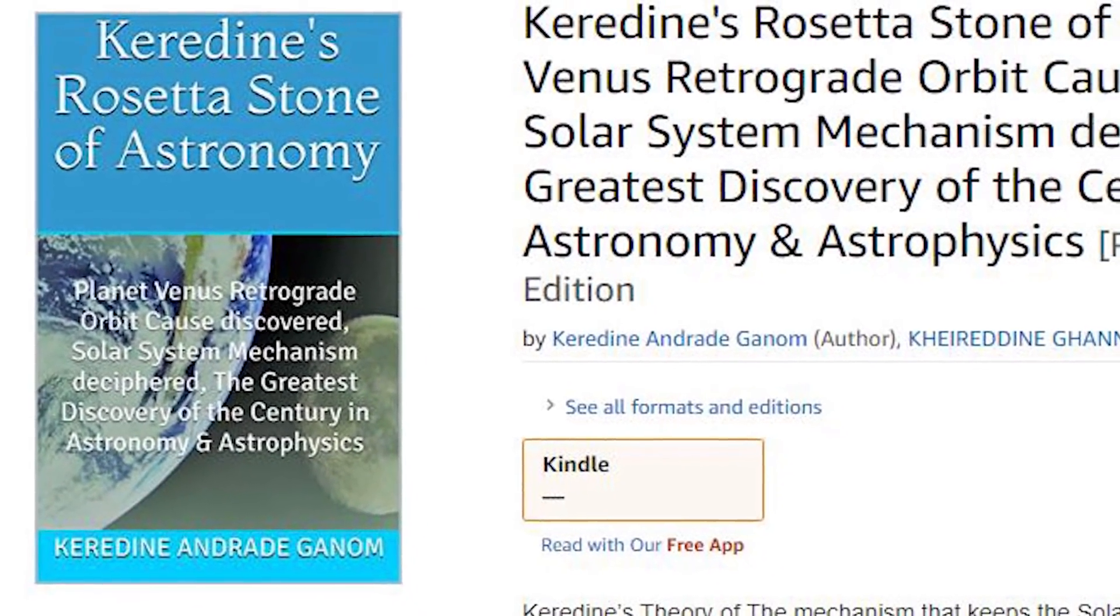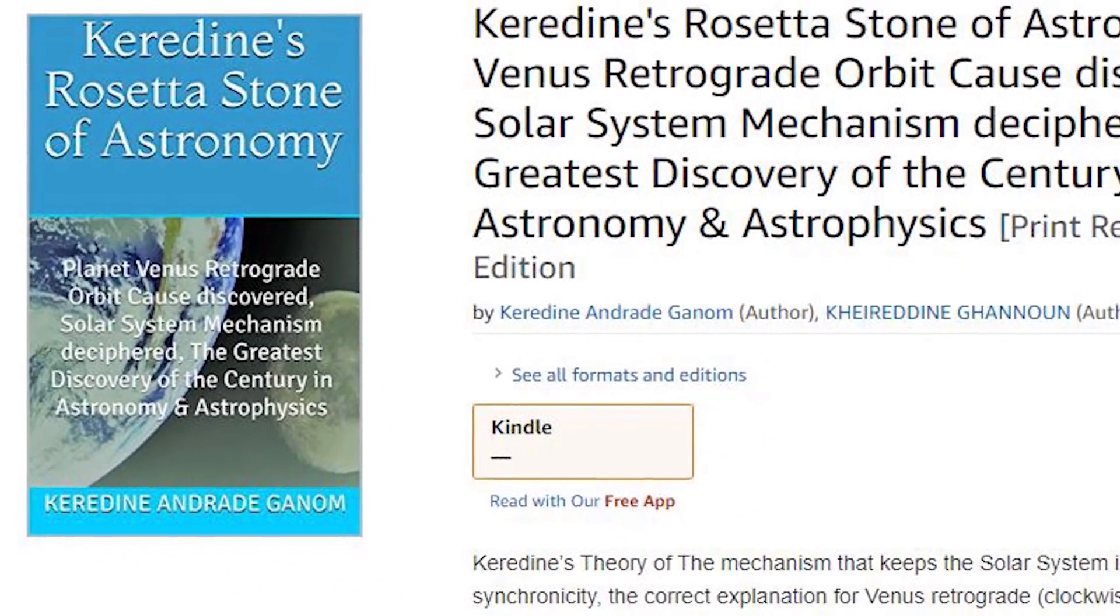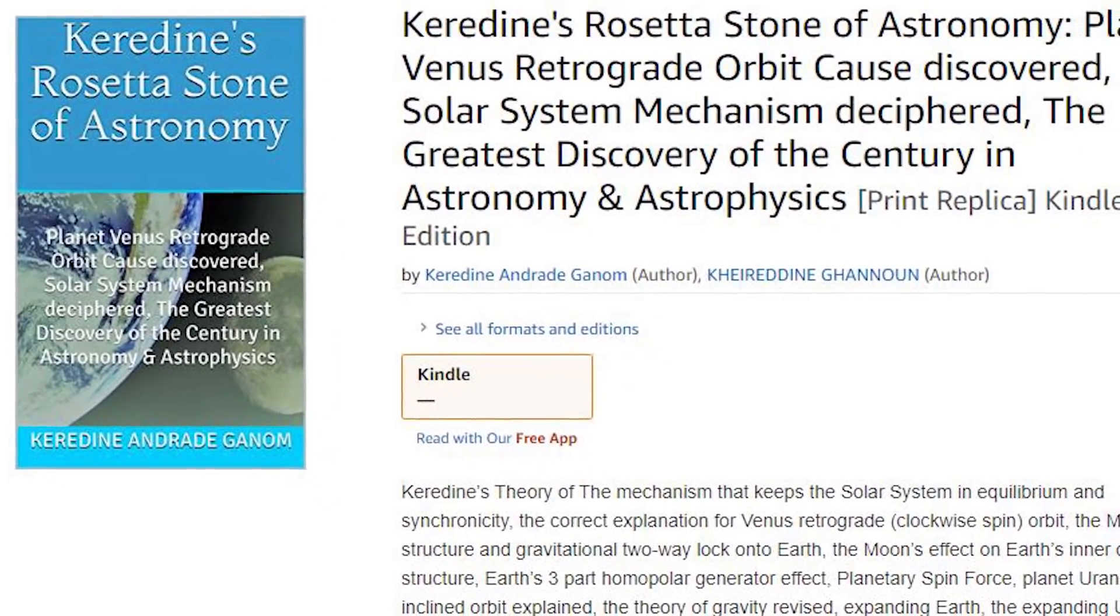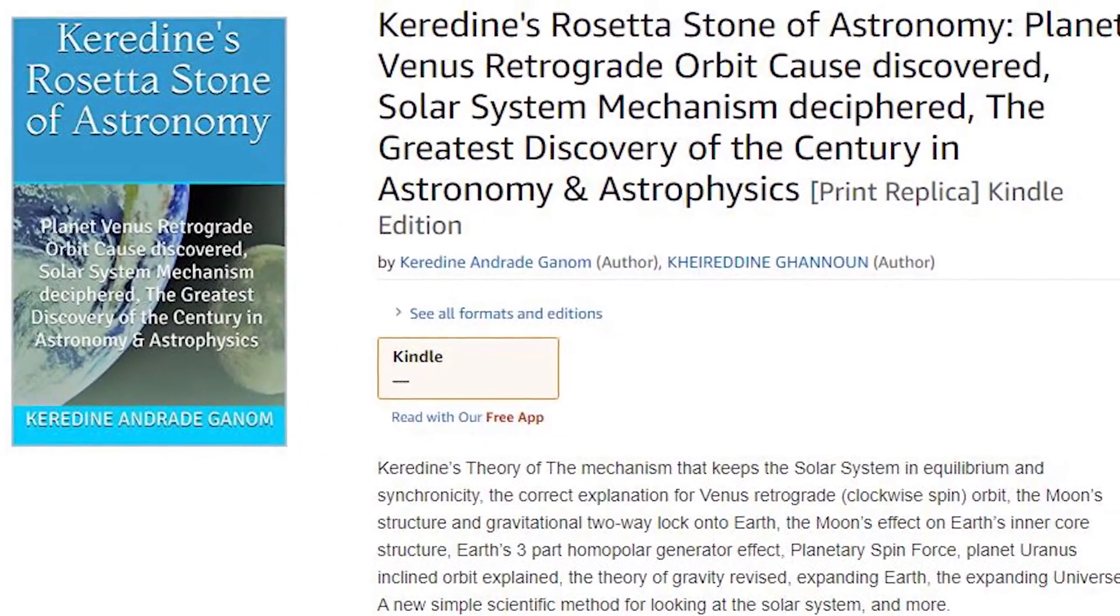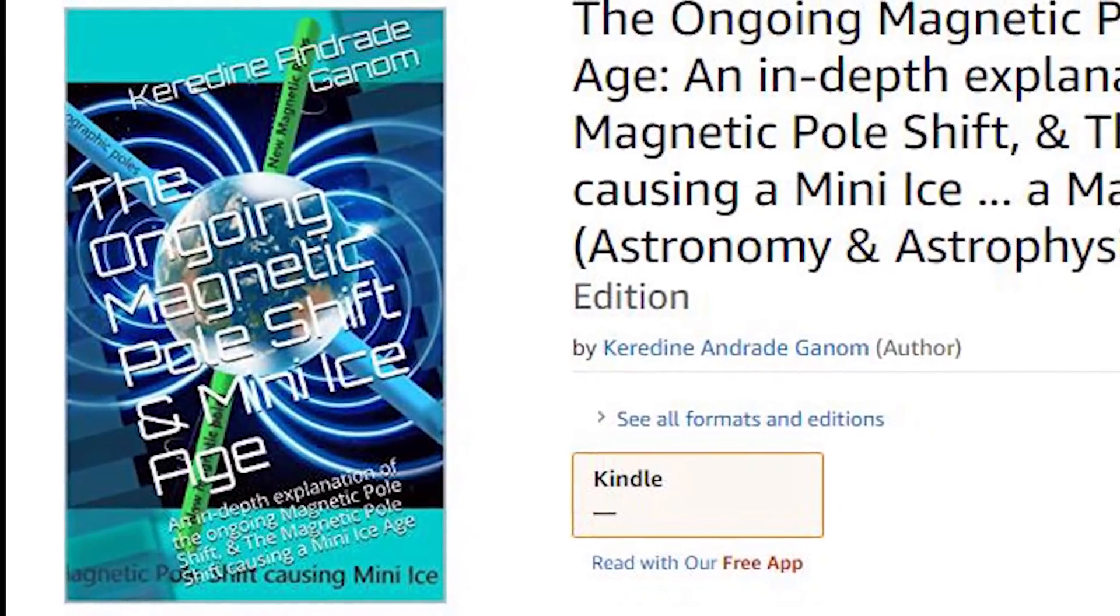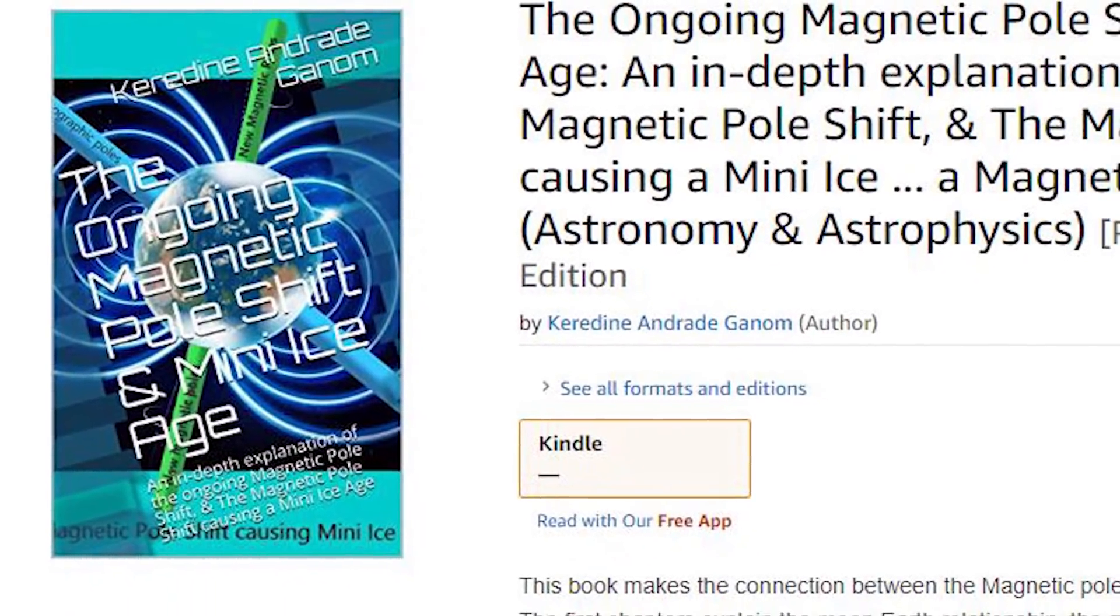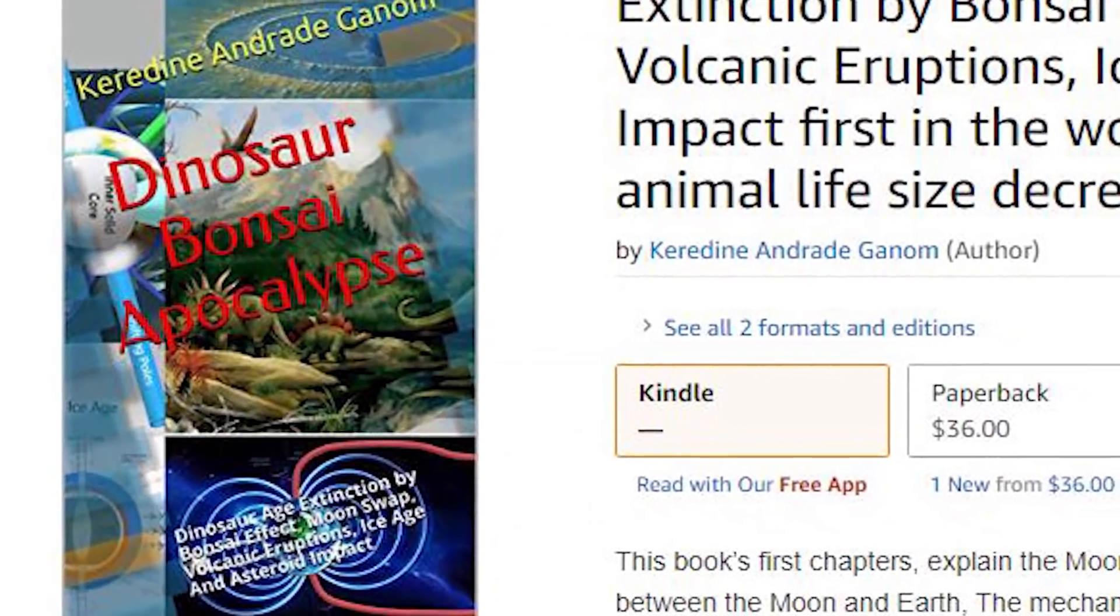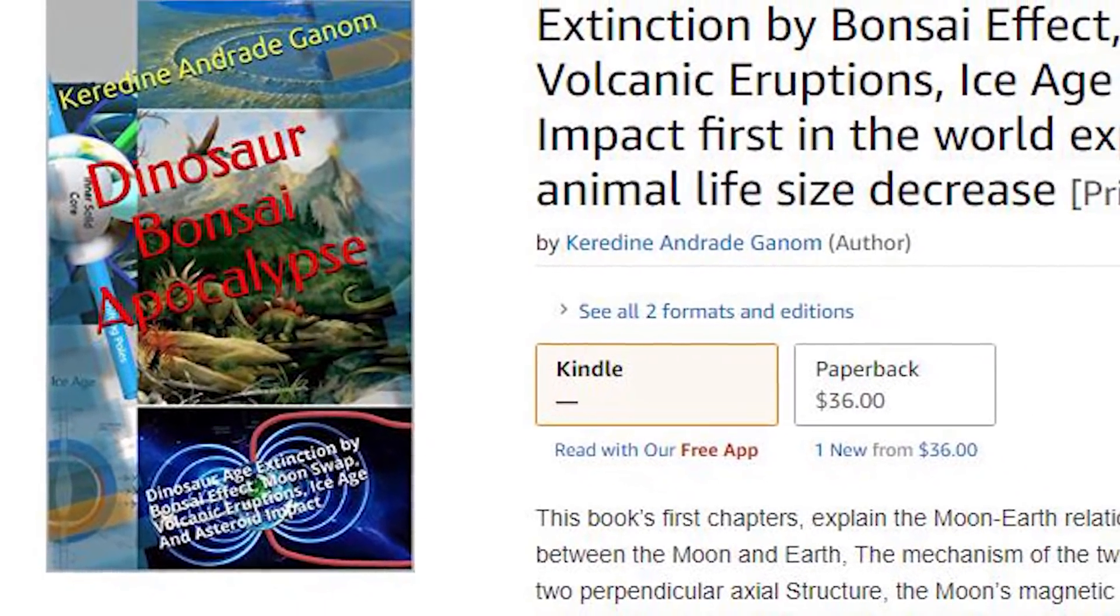This book is the first of a series of four books. This book explains the mechanism of the gravitational two-way grip between the Earth and its moon, with chapters and explanation on the Venus retrograde orbit. The second book explains the ongoing magnetic pole shift and possible mini ice age.